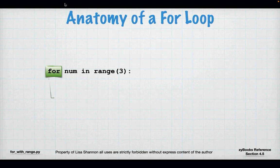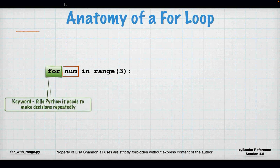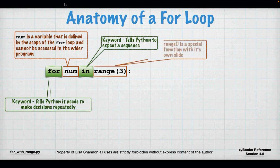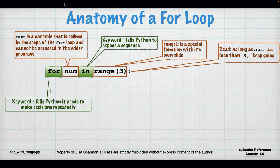Now we're going to talk about for loops. For loops have a different anatomy than while loops. For loops have no variable defined in the global scope above the for — there's no variable line of code before the for statement. That's because the variable is defined in the statement of the for loop itself. In this example, I have 'for num in range(3)'. 'Num' is just a variable name — I could have called it Fred — and it's defined and used only in the local scope of this for loop.